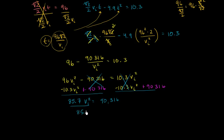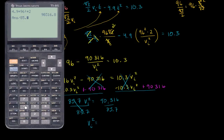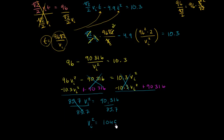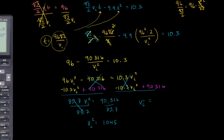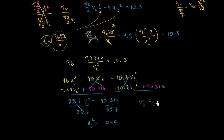Dividing both sides by 85.7, we get v sub i squared equals 90,316 divided by 85.7, which is approximately 1,054 meters squared per second squared. Taking the square root of both sides gives v sub i equals approximately 32.5 meters per second.